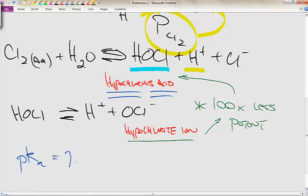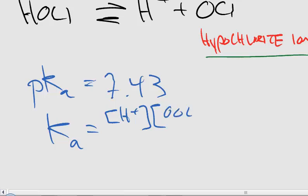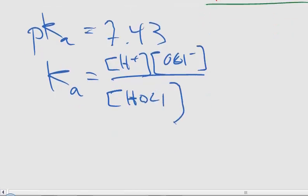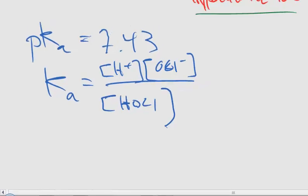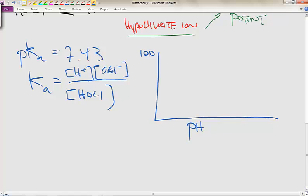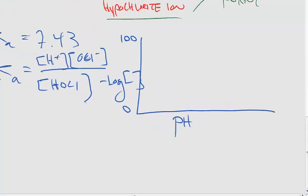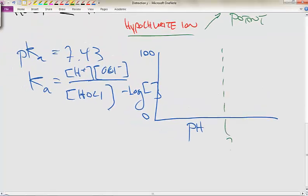The pKa of this system, or the acid dissociation constant, is about 7.43 from the literature. The Ka is products over reactants: H+ plus hypochlorite ions divided by HOCl, the hypochlorous acid. If we were to draw the concentration profiles in this system, pH versus negative log concentration of either hypochlorous acid or hypochlorite ion, we draw the inflection point where this pKa is, 7.43.